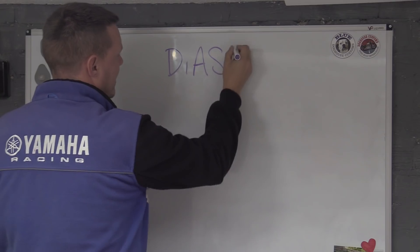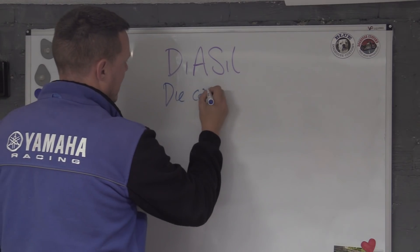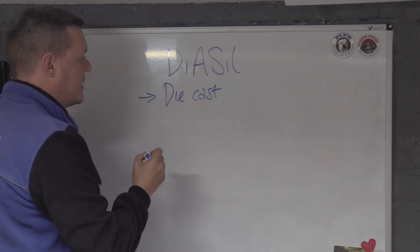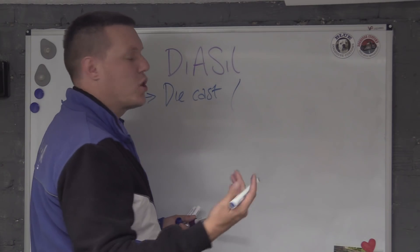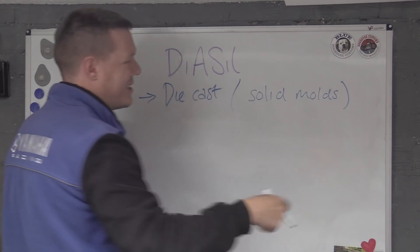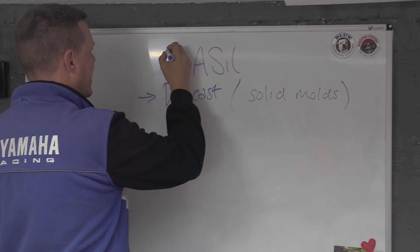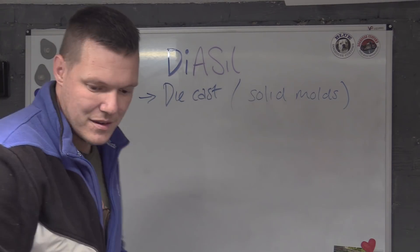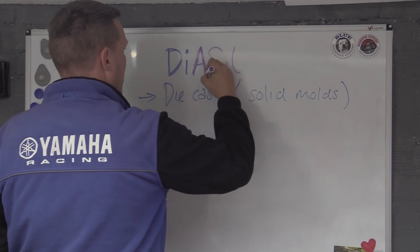DIASIL stands for die cast, which is basically a casting process with solid molds. The 'DI' bit is die cast, and then 'A' is aluminum.